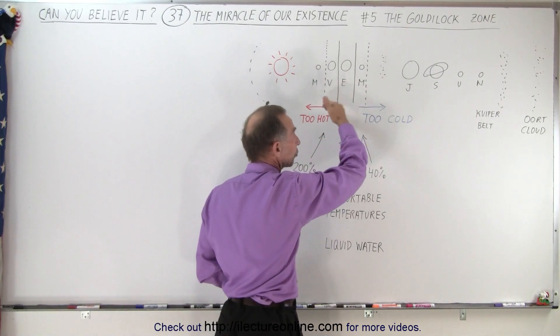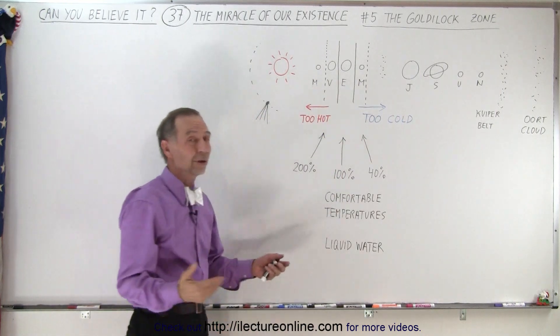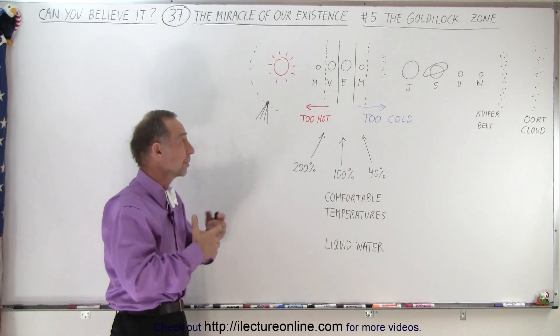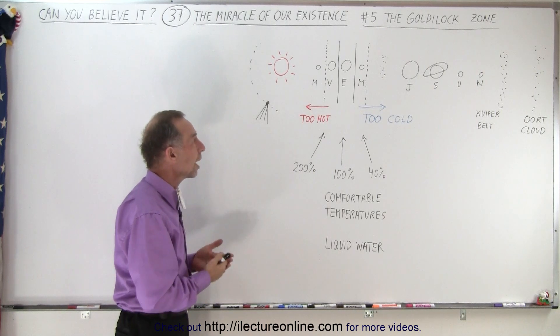Where we have the asteroid belt, again, it's too far away, too cold, life could not exist there. And Mercury is too close to the Sun. Temperatures in the daytime are absolutely enormous. You couldn't live there because it's just simply too hot.